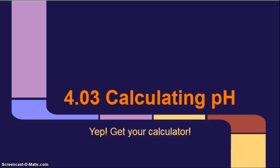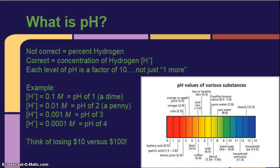Hey chemistry, Mrs. KJ here, going over 4.03, calculating pH. I know you've been so disappointed that we haven't been doing math the last couple lessons. So here you go, get out your calculator.